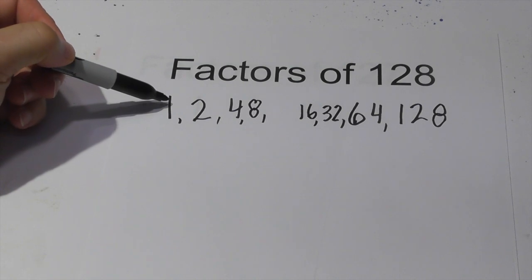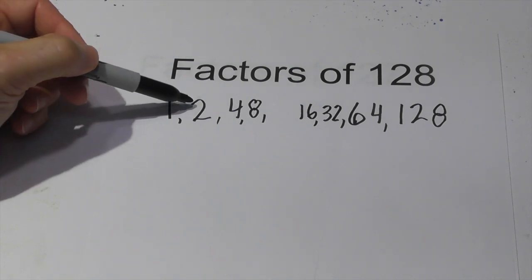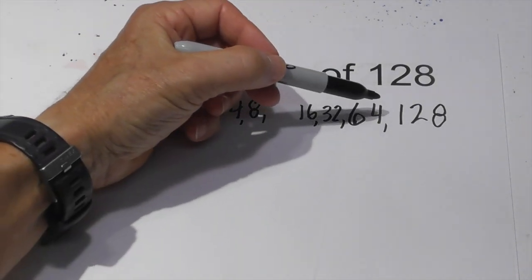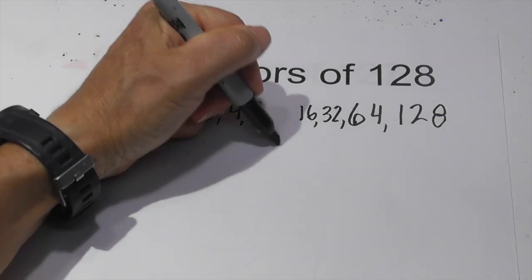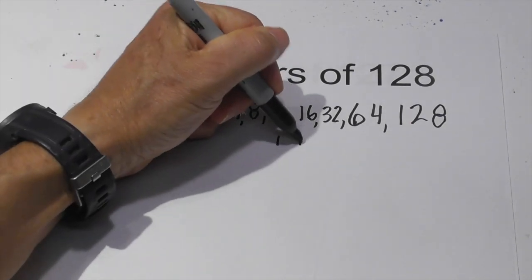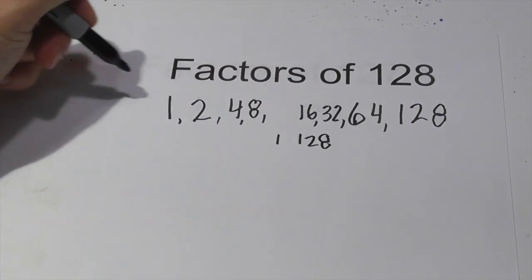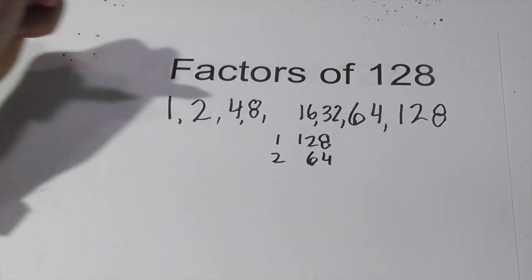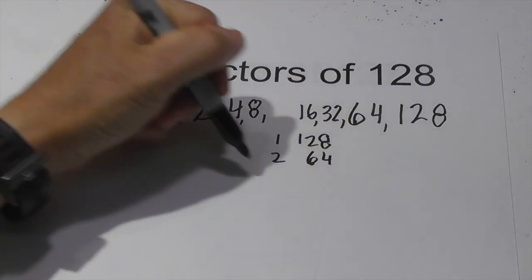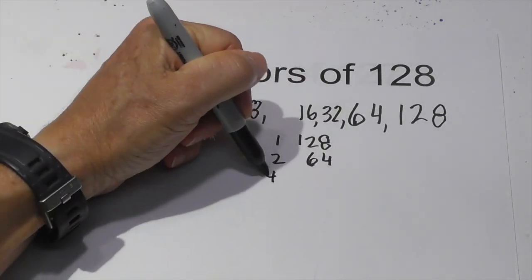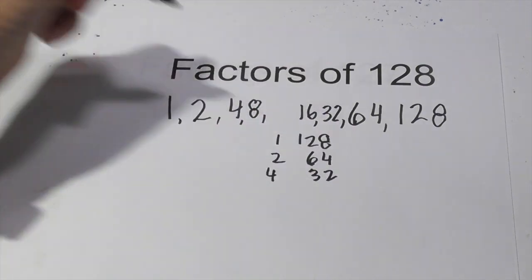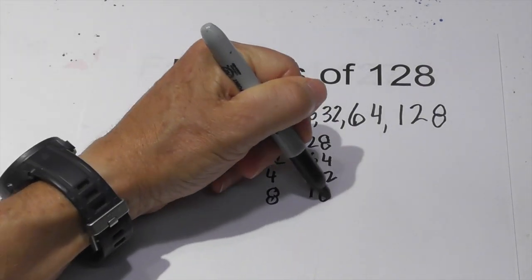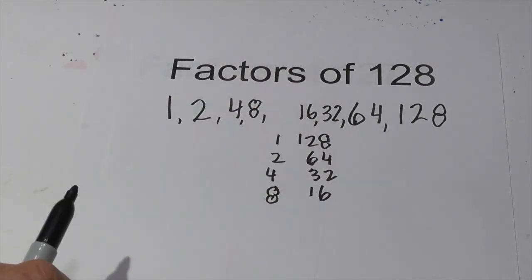So again, the factors of 128 are 1, 2, 4, 8, 16, 32, 64, 128. And in pairs, it's 1 times 128, 2 times 64, 4 times 32, 8 times 16.